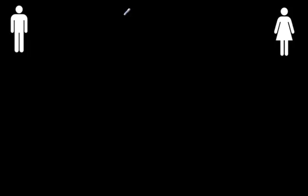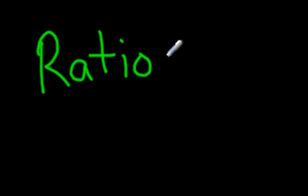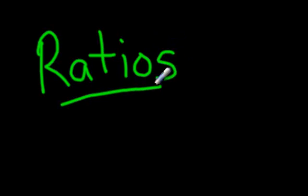Alright folks, welcome to Math Class. Here we go. We're going to start with a topic called ratios — here's how you write it. You may have seen that word before. A ratio is basically a comparison of two numbers, or two things.